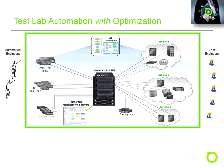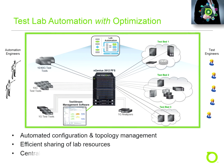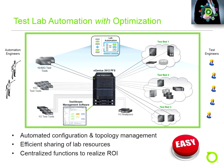This diagram shows the NetScout approach to test lab automation. Using this approach, the lab is not only automated but also optimized in the process. As a result, lab resources can be shared efficiently, topology changes can be made remotely using automation software, and core lab functions are centralized in order to help realize the full return on investment potential of test lab automation.